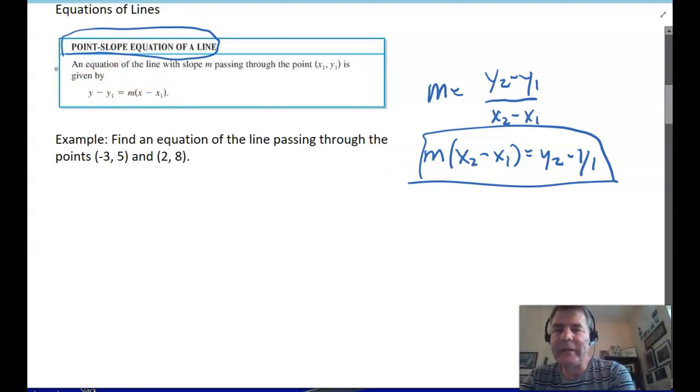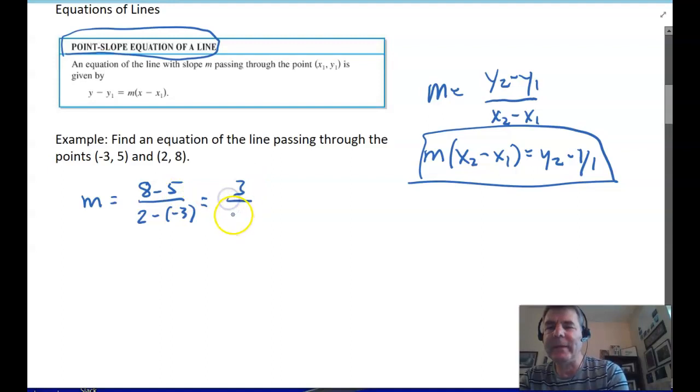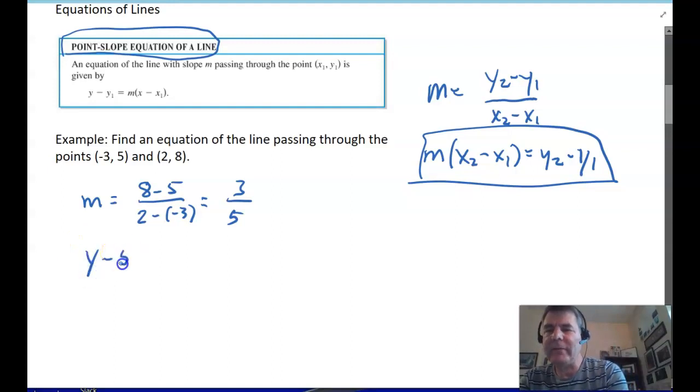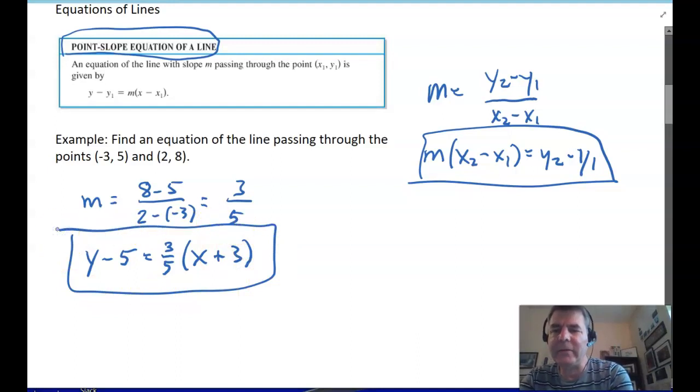So, let's find an example of a line passing through the points negative 3, 5, and 2, 8. We need to get the slope first. That's 8 minus 5 over 2 minus a negative 3. Watch that negative right there. So, I have a 3 on top and have a 5 on the bottom. Now, it doesn't matter which point I use for x1 and y1. So, I'm going to use the first one. So, I'm going to say y minus 5 equals 3 fifths x plus 3 because x minus a negative 3. And that is an equation of a line passing through those two points.